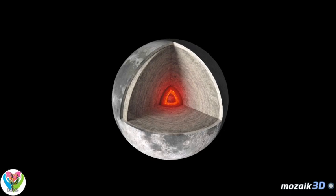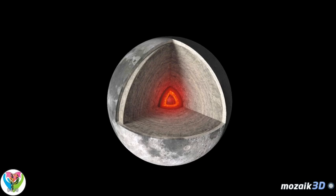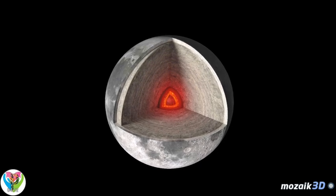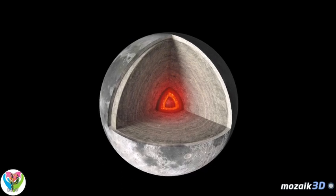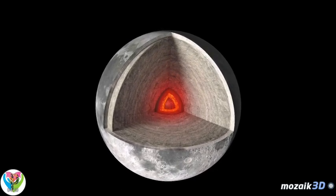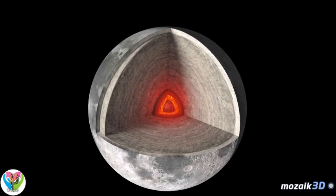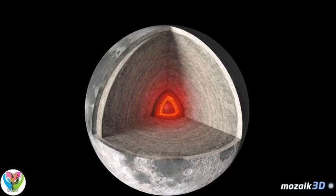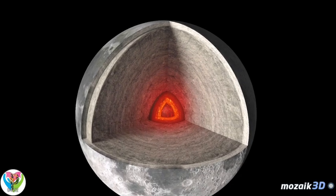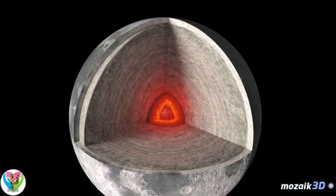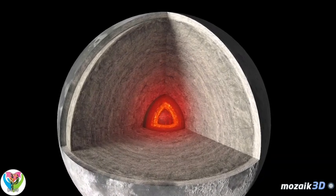The internal structure of the Moon is similar to that of Earth. It is composed of a crust, a mantle, and a core. The solid crust is 20 to 60 kilometers thick, and is made up of volcanic rock. The upper mantle is also solid, with a partly molten layer below. The mantle has a thickness of 1,200 kilometers. The outer core is about 300 to 350 kilometers thick and is composed of molten substances, while the inner core is solid and has a diameter of about 150 kilometers.